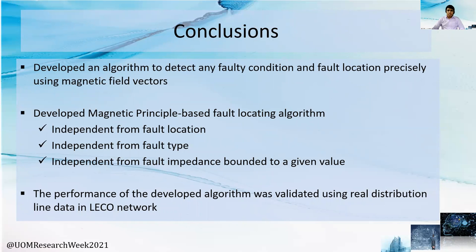Under this project, we have newly developed an algorithm to locate faults in overhead distribution lines by monitoring the resultant magnetic field vector. It is tested and proven in a simulated environment that our algorithm is independent from fault location, fault type, and fault impedance bounded to a given value. The performance of the model distribution line was validated using real distribution line data in the LECO network. We believe this project has a greater potential to impact the enhancement of power system reliability.